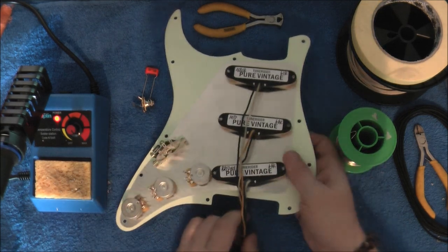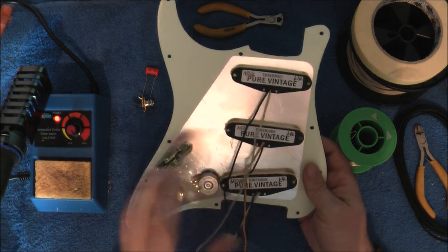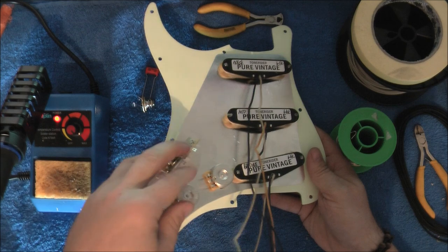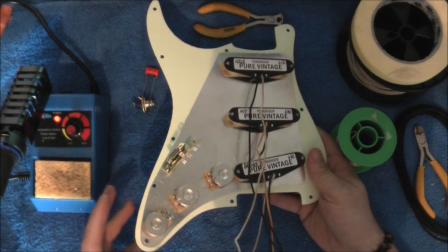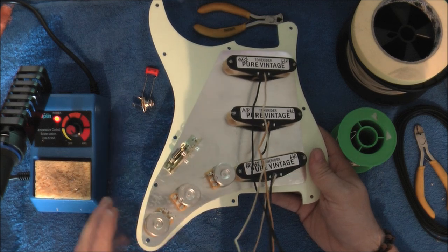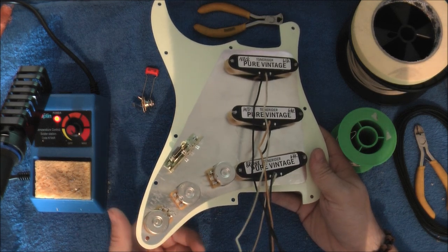We've started to advertise these on our website now. It's basically a set of Tone Rider pickups built onto a fully loaded scratch plate, as you can see with CTS pots, CRL switch, basically all the best components. You can buy them separately and do it yourself, and hopefully this tutorial might help you out a little bit.